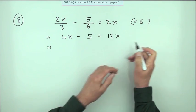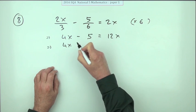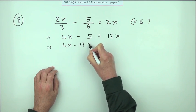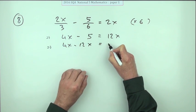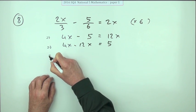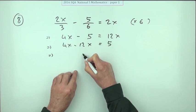So plus 12x would go across as minus 12x, subtracting 12x from both sides. Minus five goes across to plus five, adding five to both sides. Four take away twelve is negative 8x.